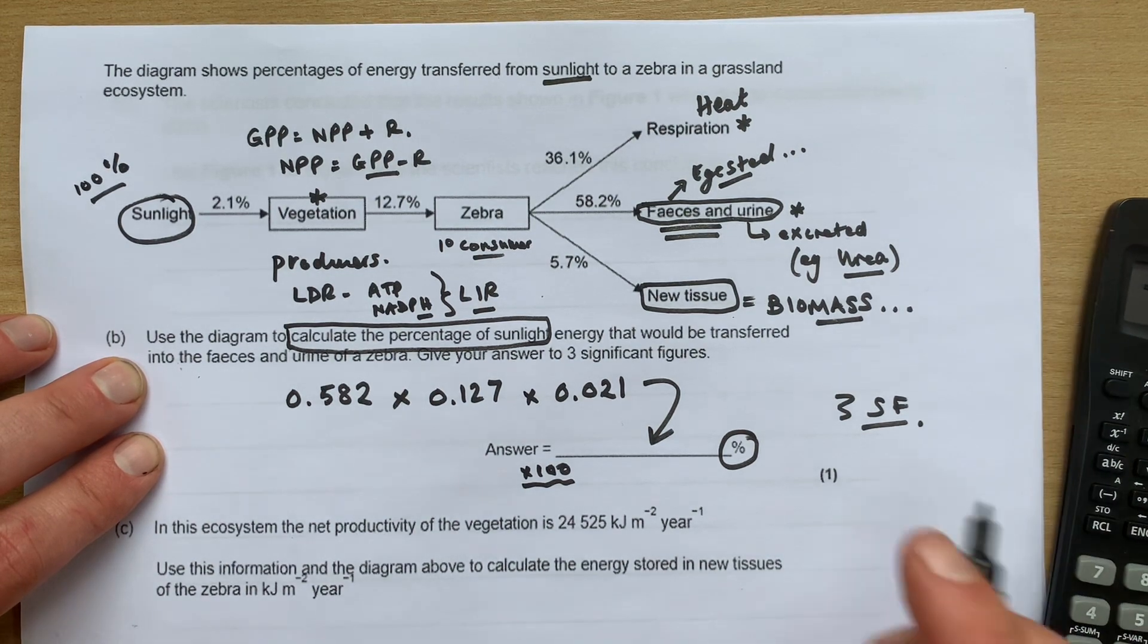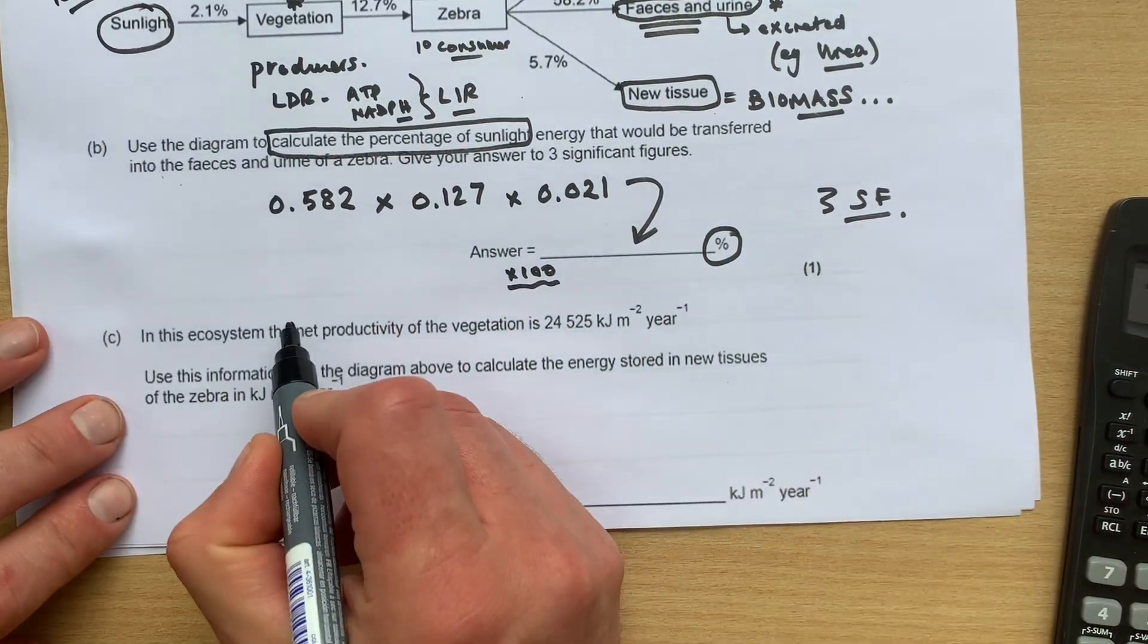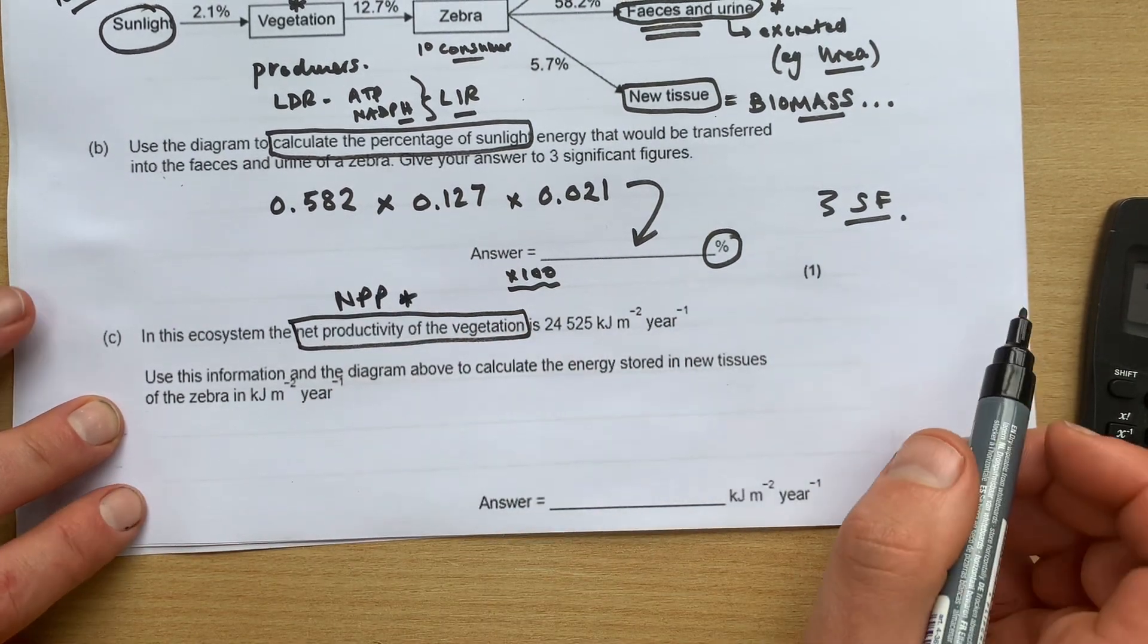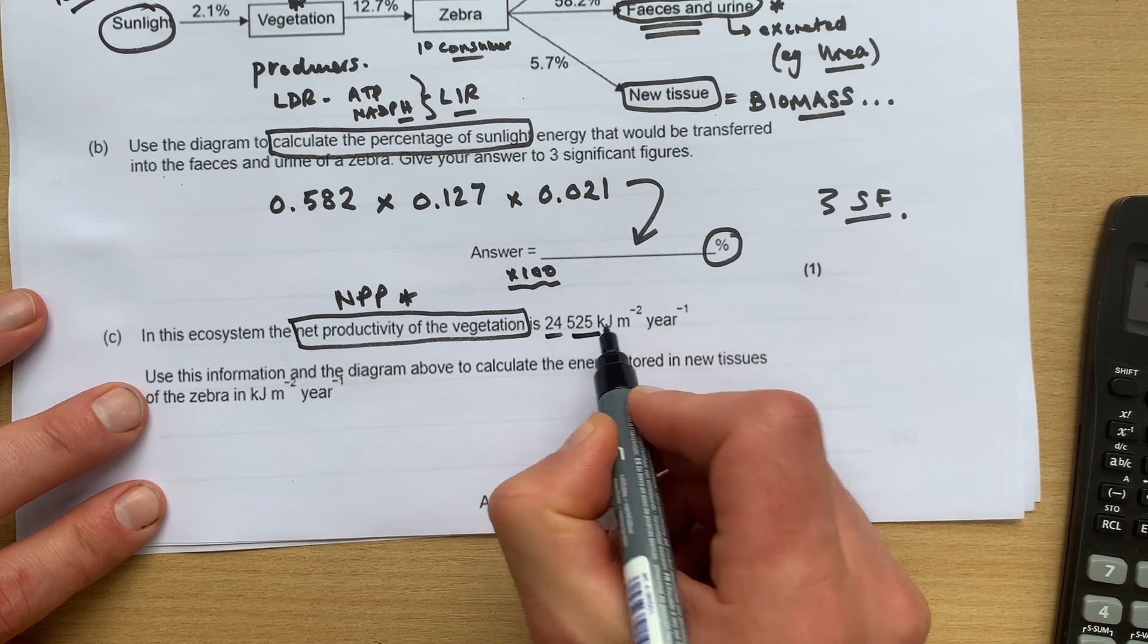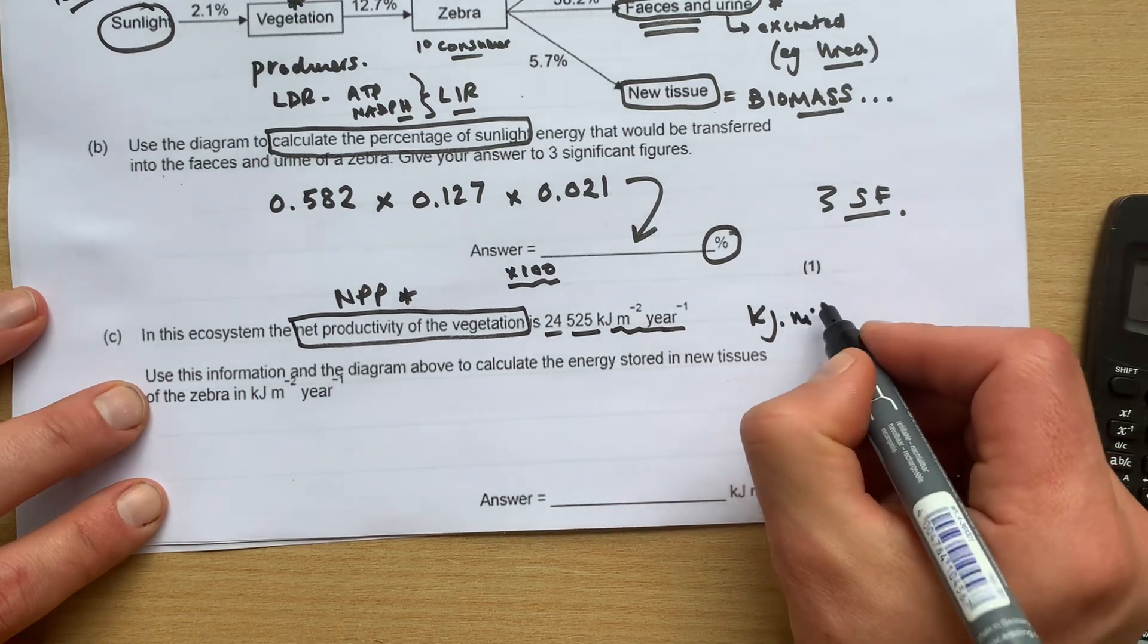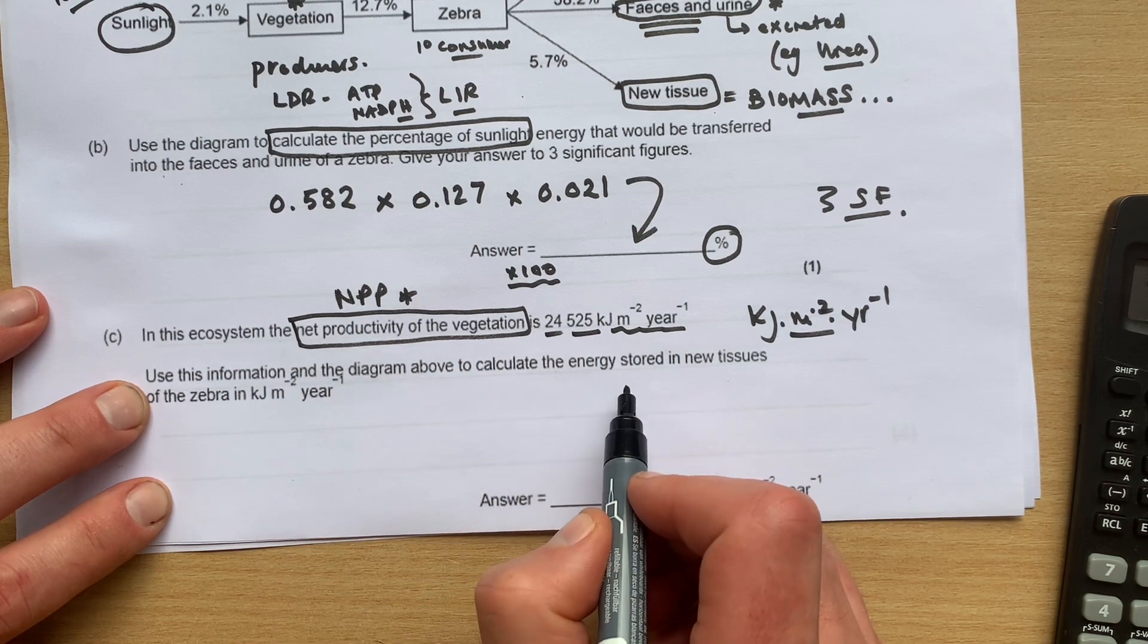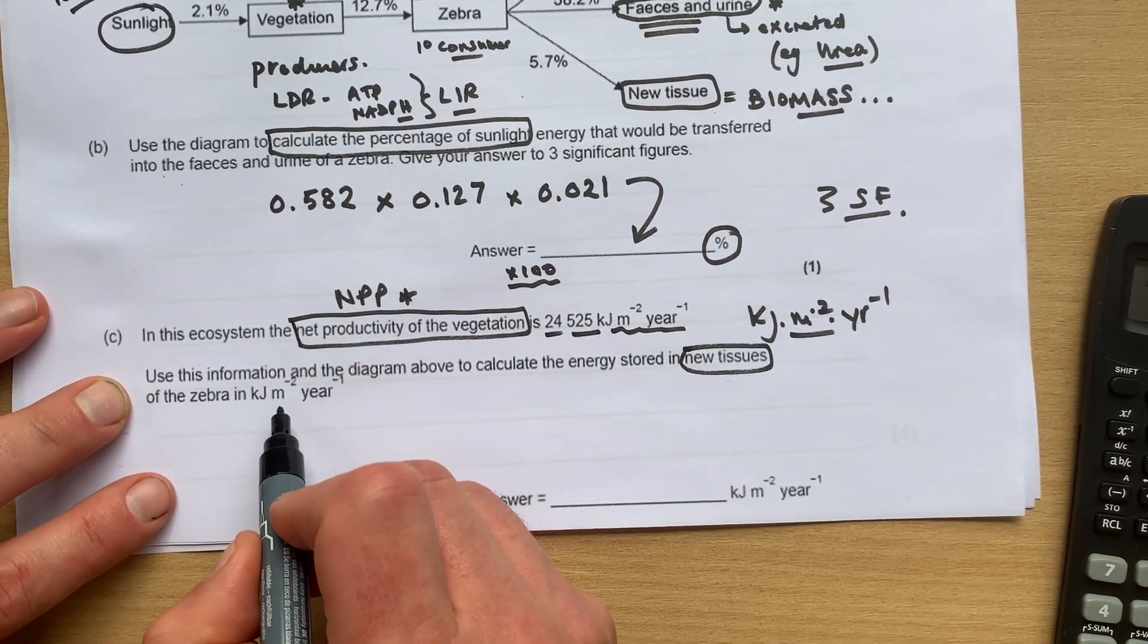Right, in the ecosystem the net productivity - so this is NPP, the dry carbon biomass of the vegetation - is 24,525 kilojoules, so the units are kilojoules per meter squared per year. Use this info and the diagram to calculate the energy stored in new tissues of the zebra in kilojoules per meter squared per year.